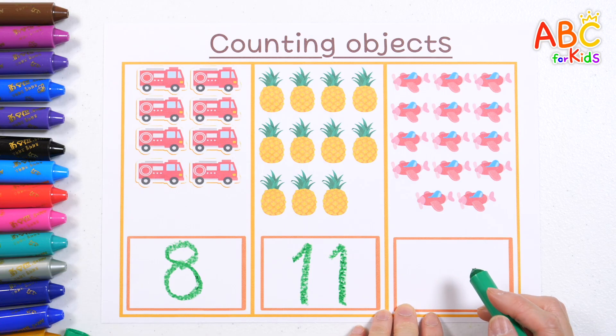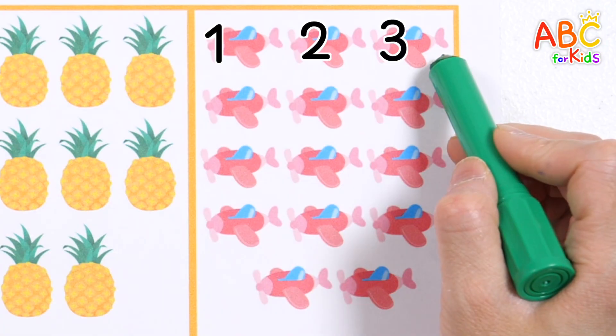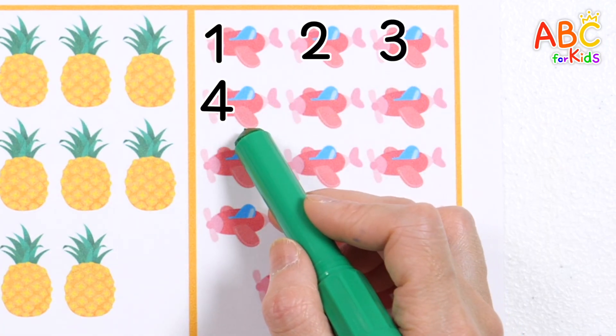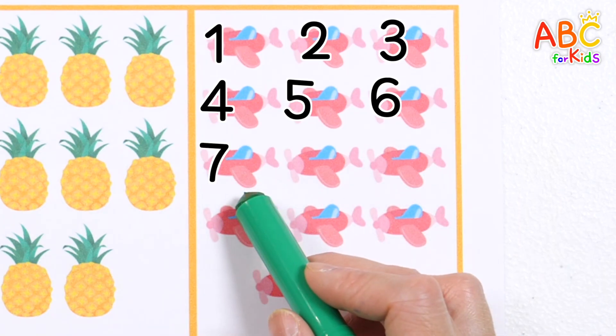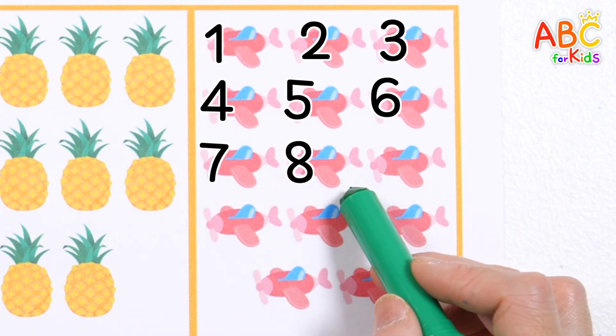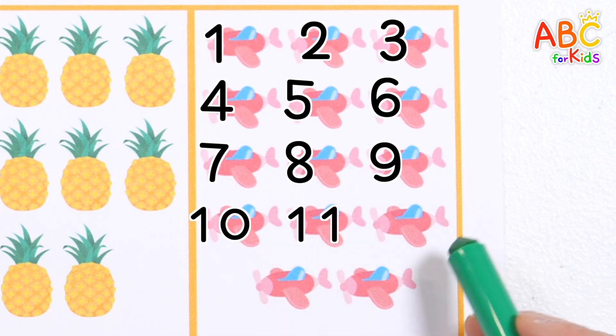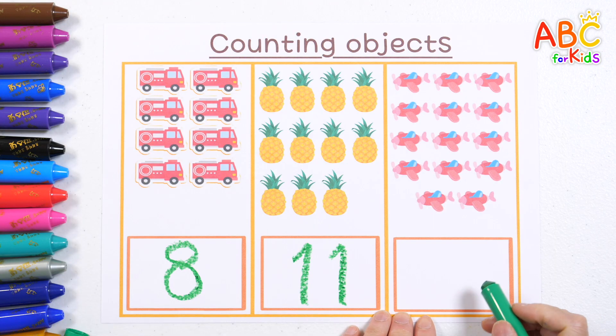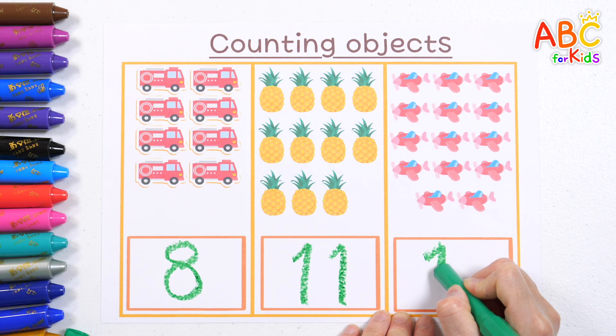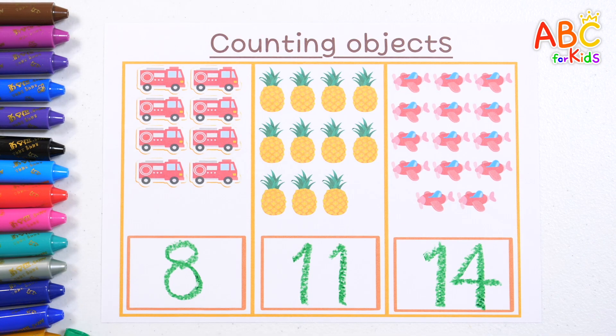How many airplanes do you see? 1, 2, 3, 4, 5, 6, 7, 8, 9, 10, 11, 12, 13, 14. There are 14 airplanes. Let's write the number 14. Good job.